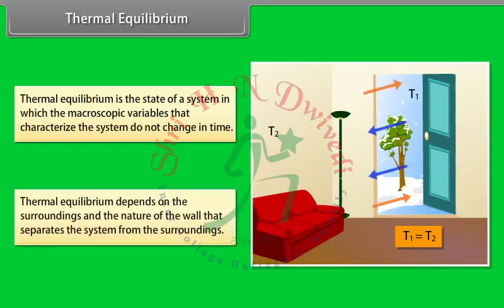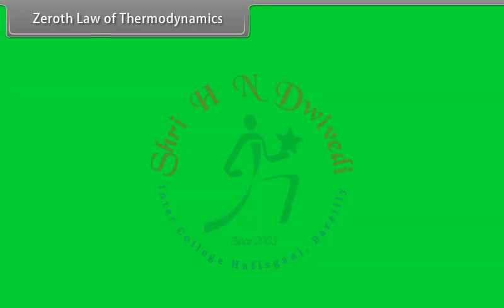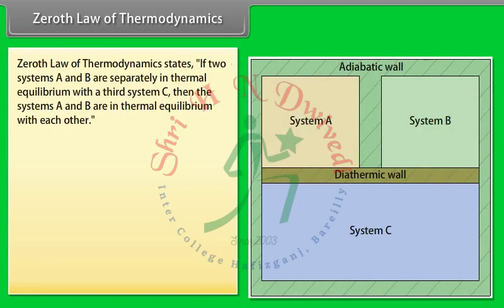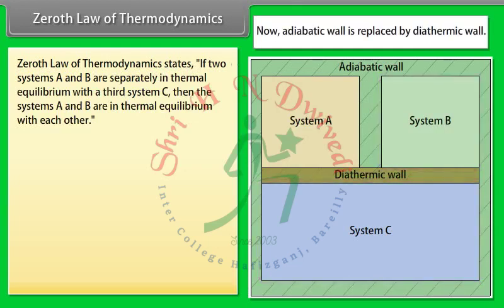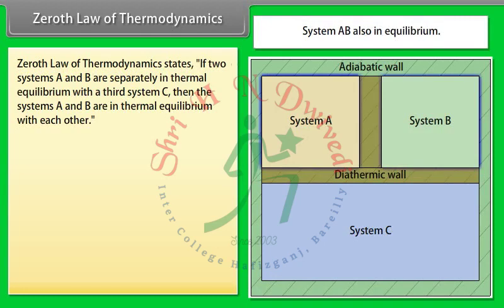Thermal equilibrium depends on the surroundings and the nature of the wall that separates the system from the surroundings. The Zeroth Law of Thermodynamics states: if two systems A and B are separately in thermal equilibrium with a third system C, then systems A and B are in thermal equilibrium with each other.